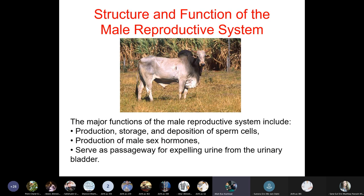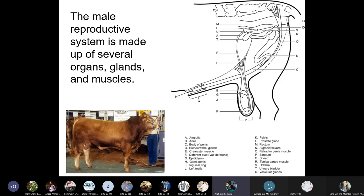The major functions of the male reproductive system include: production, storage, and deposition of sperm cells; production of male sex hormones; and serving as a passageway for expelling urine from the urinary bladder. The male urogenital system has a single opening through which both genetic material and urination are performed. The male reproductive system is made up of several organs, glands, and muscles.